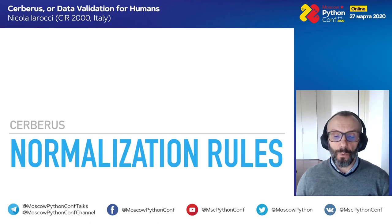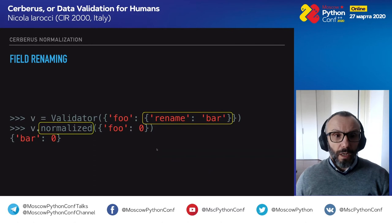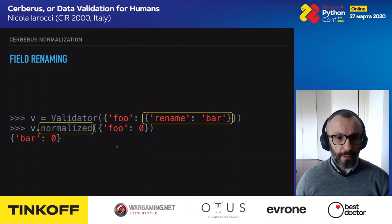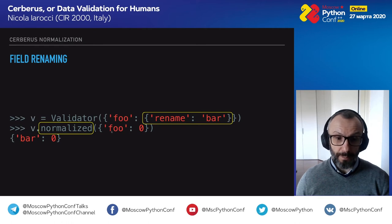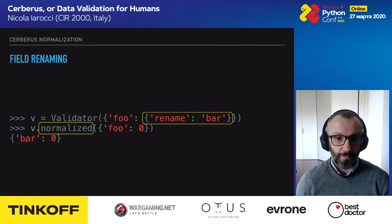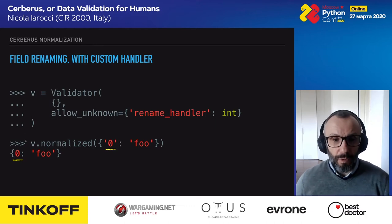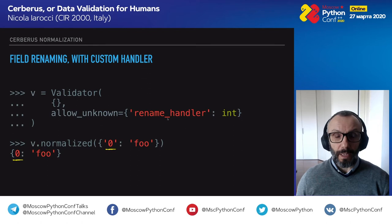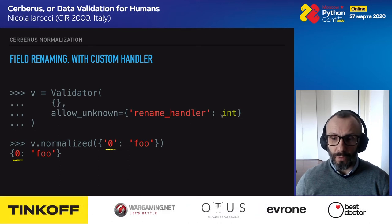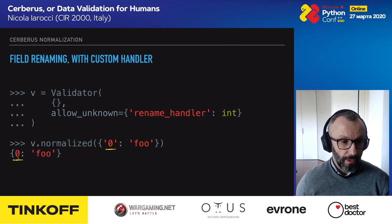Talking about normalization, we have some useful tricks. For example, field renaming: if your validator has a rename rule for a field called 'foo', every time a document with a 'foo' field passes through the normalize method, that field gets renamed to 'bar'. You can also provide a custom rename handler to apply more powerful transformations — for example, transforming the key from a string to an integer.